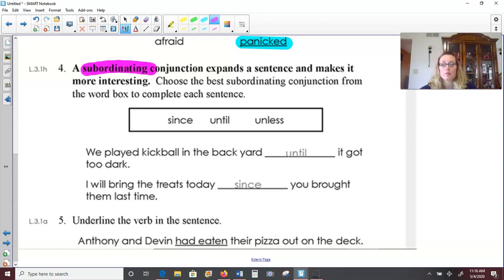Number four. A subordinating conjunction expands a sentence and makes it more interesting. We did this in another lesson. We're going to use since, until, or unless to fill in our sentences. We played kickball in the backyard, until it got too dark. I will bring the treats today, since you brought them last time.